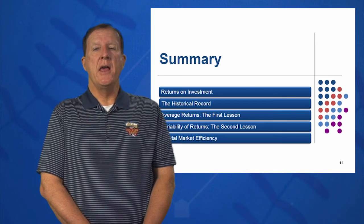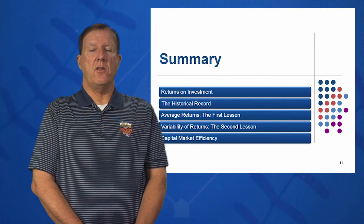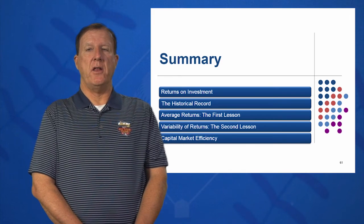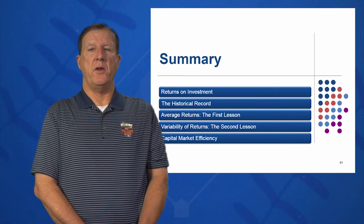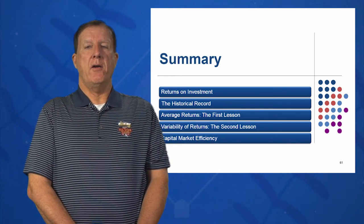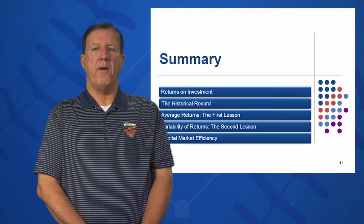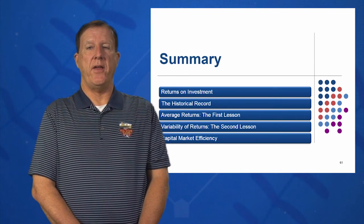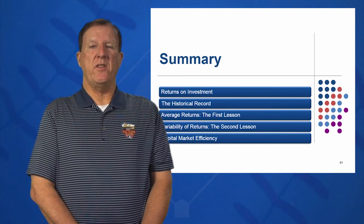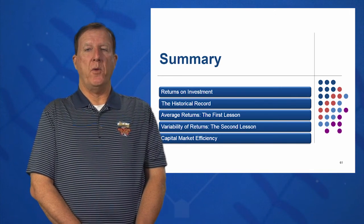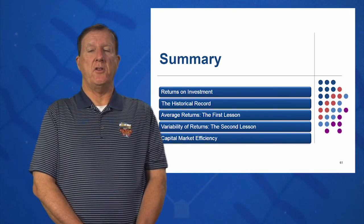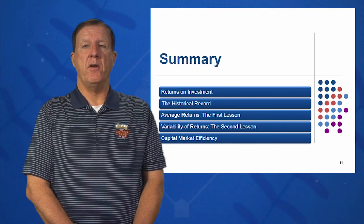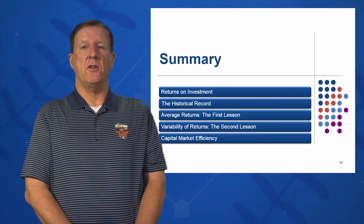How much risk can you tolerate? Learning objective number four: what is the variability or volatility of these returns? We should look at which returns and which instruments are more volatile than others, and we can do this by measuring their standard deviation and variance. And finally, what is an efficient capital market — a market which adjusts quickly to changes in information. I hope you've enjoyed session number 12 of Introduction to Finance.